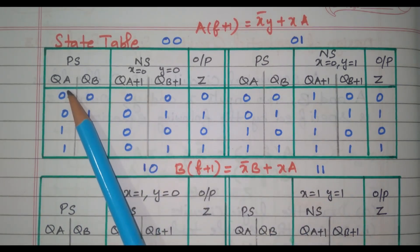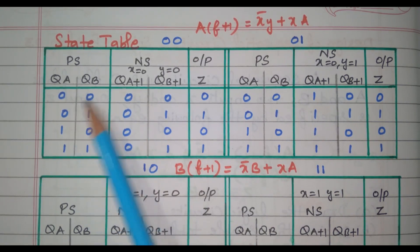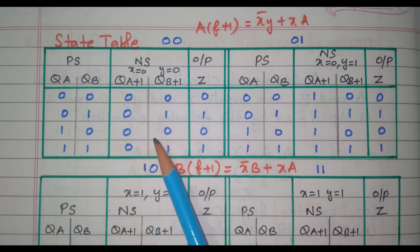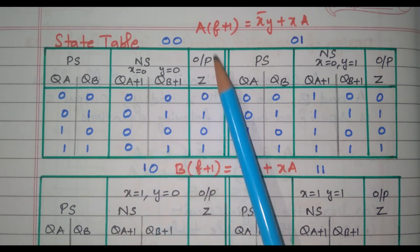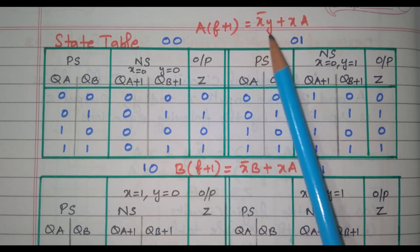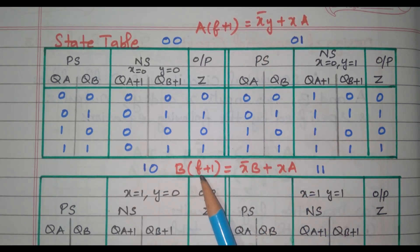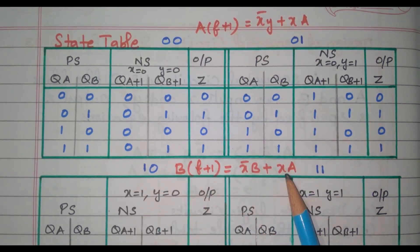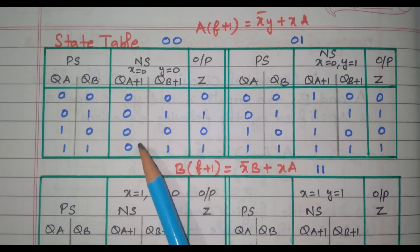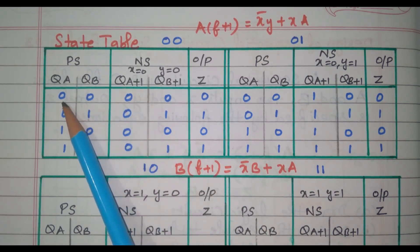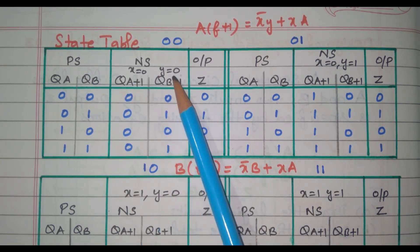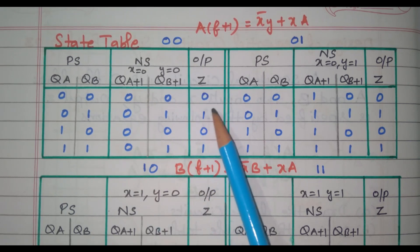From this we need to identify the next state. How to identify the next state? The equation is given: A(t+1) equal to X-bar·Y plus X·A; B(t+1) equal to X-bar·B plus X·A. So by using this equation, we need to identify what is the next state. Z equal to B, so the Z can be easily obtained from the value of B — the current B value is the output value.